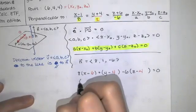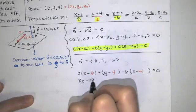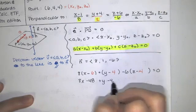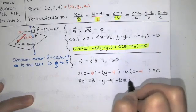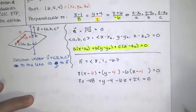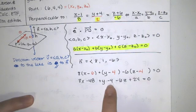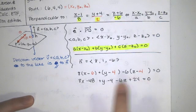So this becomes 8x minus 48 plus y minus 4 minus 6z plus 24 equals 0. So negative 4 plus 24 is 20.